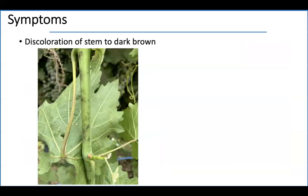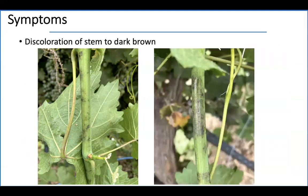Powdery mildew doesn't only show up on leaves but also on stems. These dark brown structures are caused by colonization of powdery mildew. The one on the right is a later stage on green shoots. Sometimes when those green shoots become hardened canes you can still see this blackish structure on the plant.